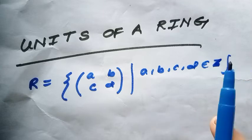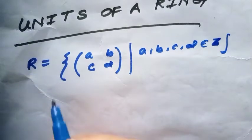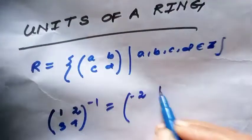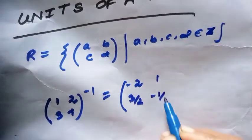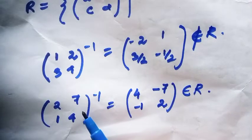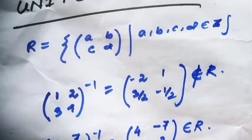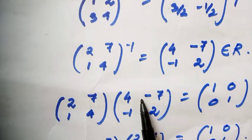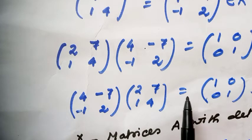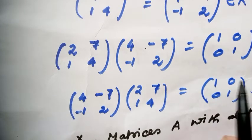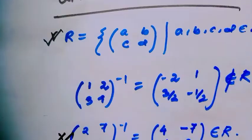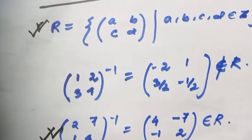Now look at the ring of 2×2 matrices whose entries are integers. Most of the matrices in this ring don't have a multiplicative inverse. For example, if we consider a certain matrix, its inverse does not belong to this ring. But if you consider another matrix, its inverse would be a member of this ring. Multiplying these two matrices gives the identity — both left multiply and right multiply yield the identity — which means this matrix is a unit of this ring.